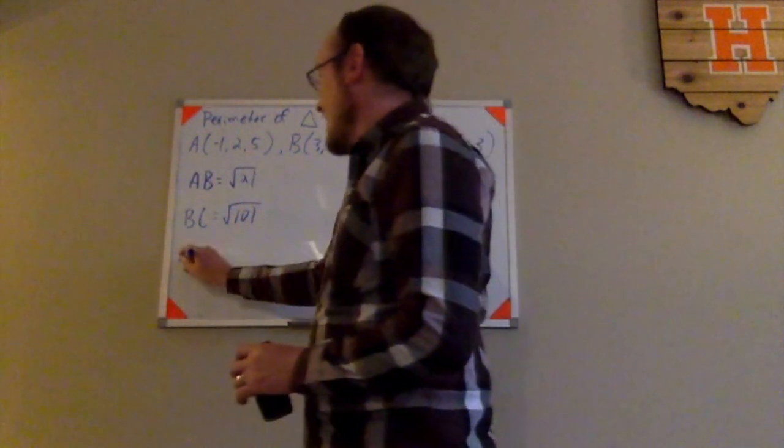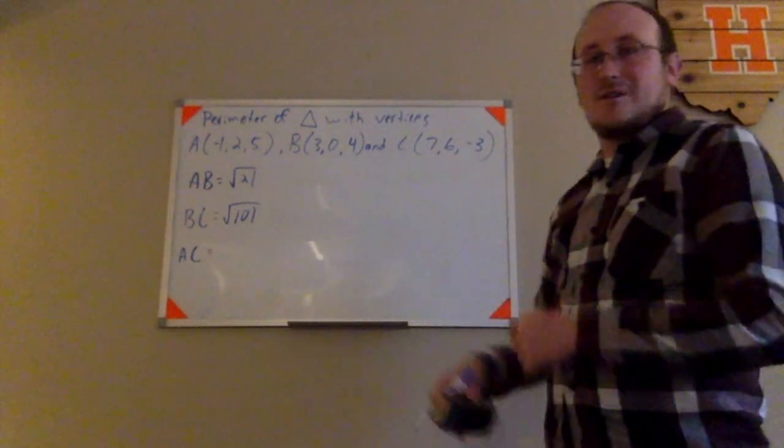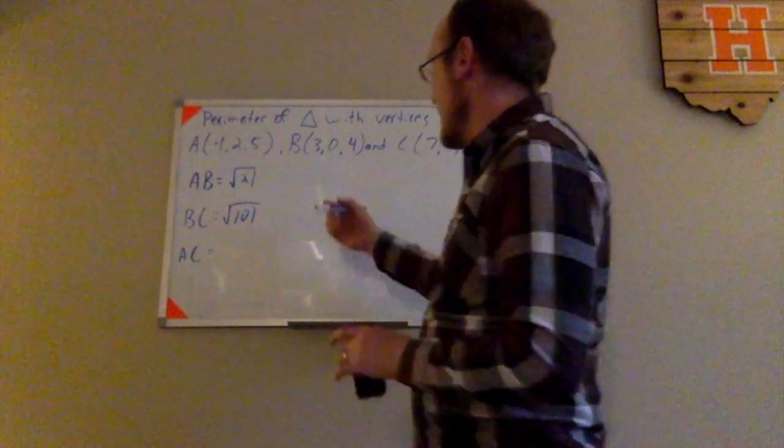And finally, I need to find side AC. Once I've found the length of side AC, then I have the length of all the sides and I can add them up to find the perimeter. So let's do that now.